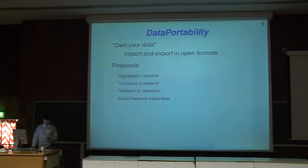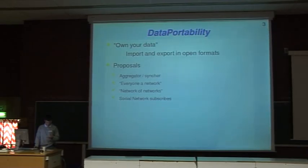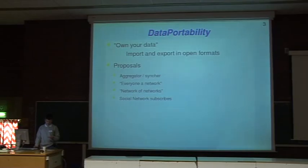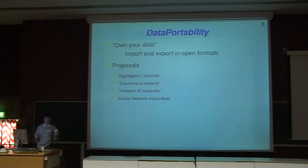Other approaches include: if everybody was a network where you'd have a blog that becomes your social network profile — but you'd have no privacy that way. Or a network of networks where someone creates a new social network with an inter-network communication protocol, but that doesn't address already existing social networks. Or a social network subscribe model, where one host has the canonical copy of all your data and other social networks subscribe to get updates — but existing social networks won't want to do that.